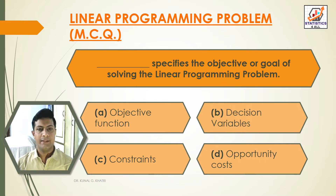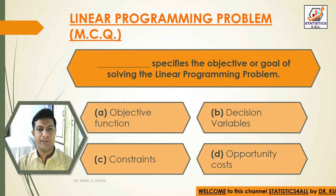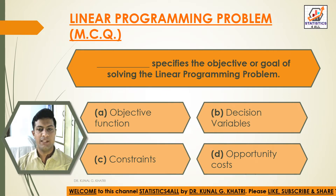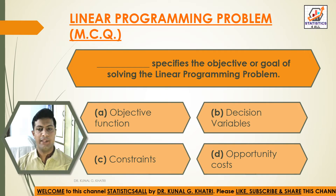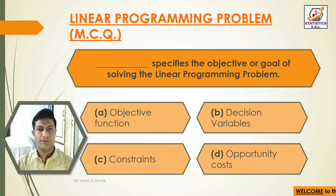Question 5: Dash specifies the objective or goal of solving the linear programming problem. Option A: Objective function. Option B: Decision variables. Option C: Constraints. Option D: Opportunity cost. Answer: Option A — Objective function specifies the objective or goal of solving the linear programming problem.